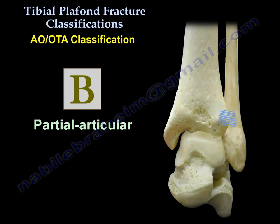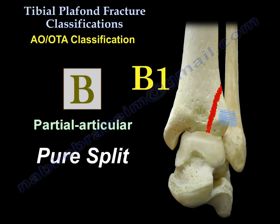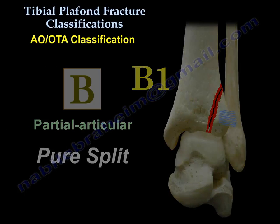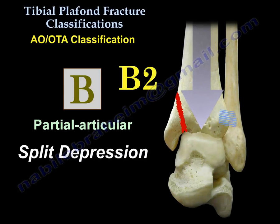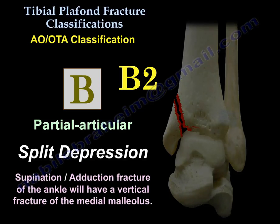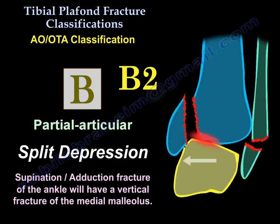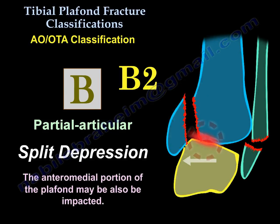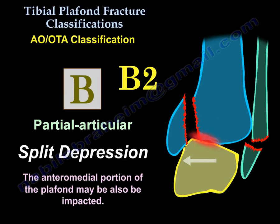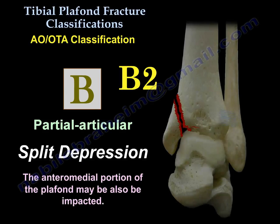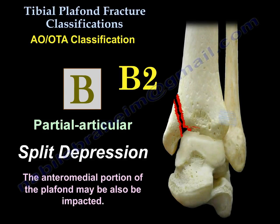The second type is called partial articular, designated the B fracture. It can be B1, which is a pure split, or B2, which is a split depression. For example, a supination-adduction fracture of the ankle will have a vertical fracture of the medial malleolus, and the intermedial portion of the plafond may also be impacted — making it look like a split depression fracture, a B2 injury.